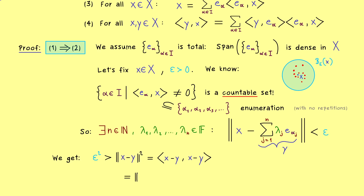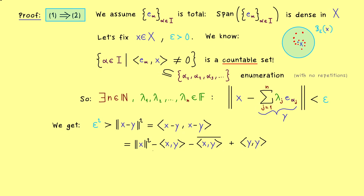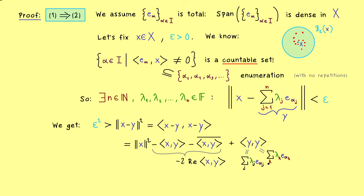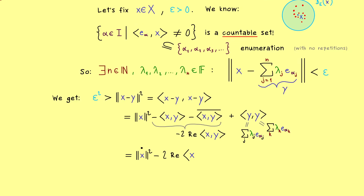This is always helpful because it means we can separate it into three terms: the first is the norm of x squared, the two middle parts are the inner product of x with y and its complex conjugate, and the last one is the norm of y squared written with an inner product again. The two middle parts can be written as minus two times the real part of the inner product ⟨x, y⟩. In the last term we put in the formula for the linear combination, writing the first sum with index j and the second with index k, then use linearity in the second argument to pull out sums and scalars.